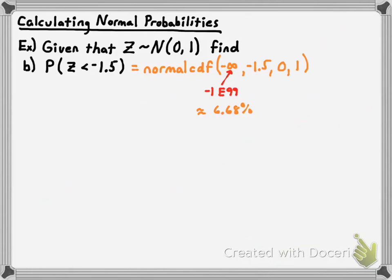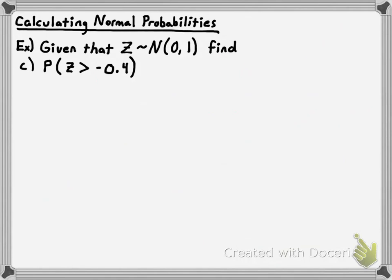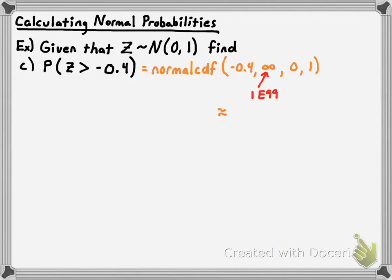Type that into your calculator and let's see what the probability is that a value is 1.5 standard deviations below the mean or smaller. That turned out to be relatively small — to three significant figures it's about 6.68% of the data values. For the next example, we're trying to find the probability that Z is greater than negative 0.4. Here we don't know the upper boundary — we know our lower boundary is negative 0.4, and technically numbers bigger than that go all the way up to positive infinity. So whenever your upper boundary is infinity, use positive 1 times 10 to the 99th power — 1E99 in your calculator. The probability that Z is greater than negative 0.4 is about 65.5%.